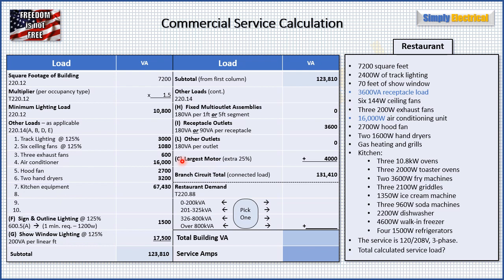Now we go to section C, which is out of order here — I did this because it's easier to wait until you have all your loads established before you go back and look for your largest motor. In the whole building, we take our largest motor load and add an extra 25% to it. Our largest motor is the air conditioner at 16,000, so we take a quarter of that — 4,000. Once we have that, we add all bold numbers together and come up with 131,410 VA. That is our total branch circuit load, also called our connected load.